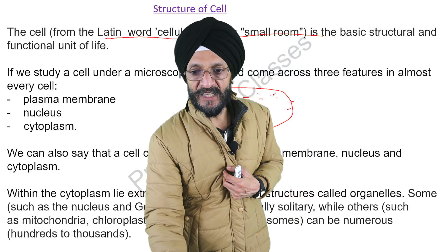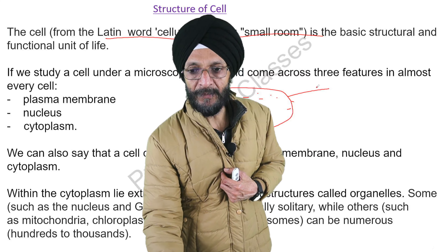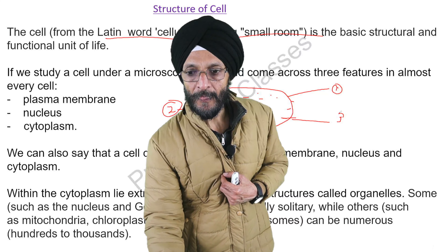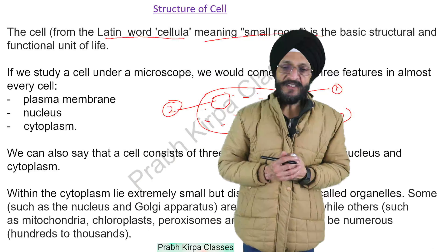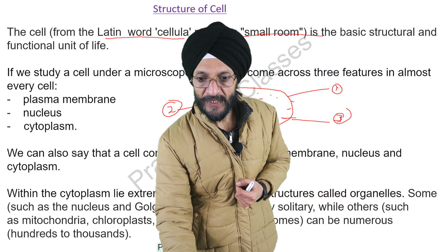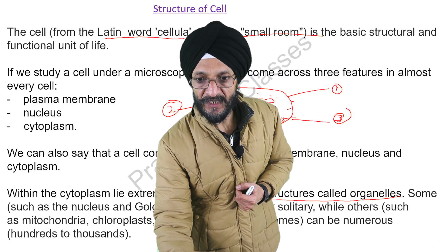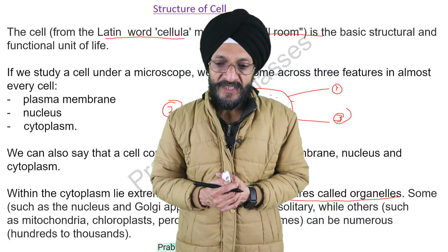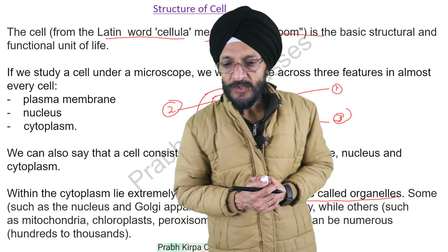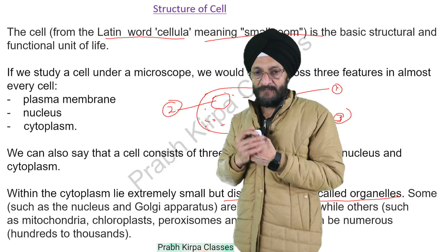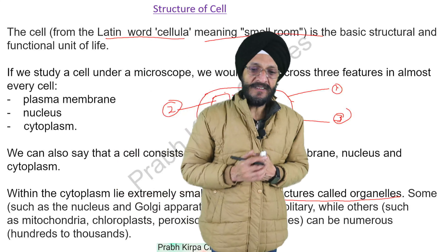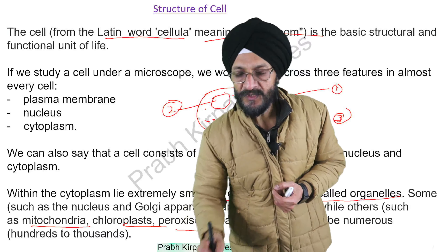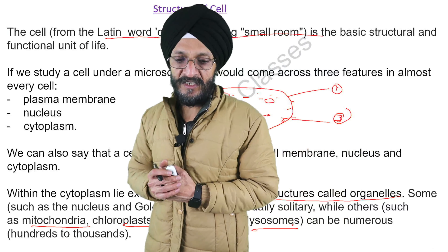The cell consists of three parts: first is the cell membrane, second is the nucleus, and third is the cytoplasm. Within the cytoplasm lie extremely small but distinct structures called organelles. Some organelles such as the nucleus and Golgi apparatus are usually solitary — meaning single — while other cell organelles such as mitochondria, chloroplasts, and lysosomes can be numerous, that is hundreds to thousands.